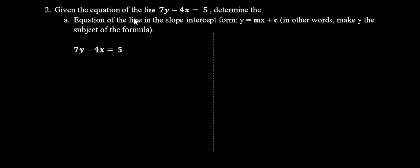We're looking at the second question. It says, given the equation of the line 7y minus 4x equals 5, determine the equation of the line in the slope-intercept form, y equals mx plus c.